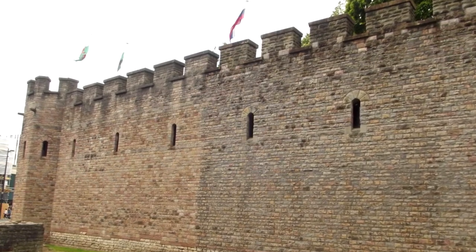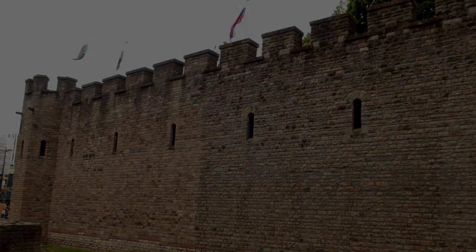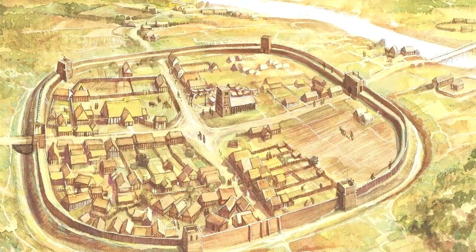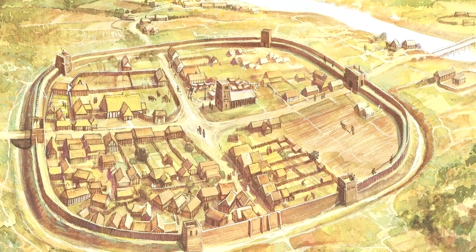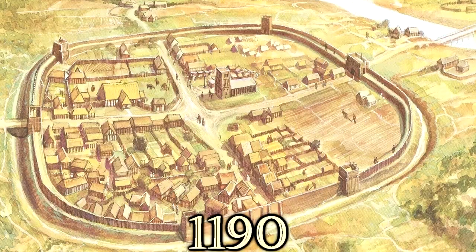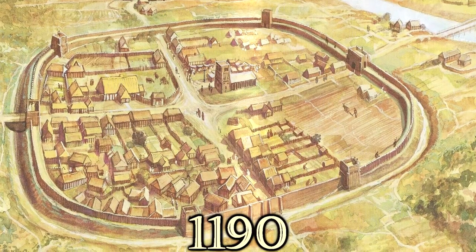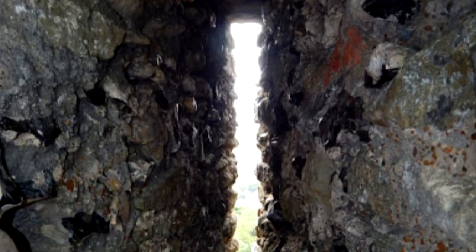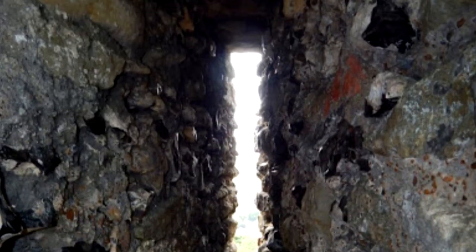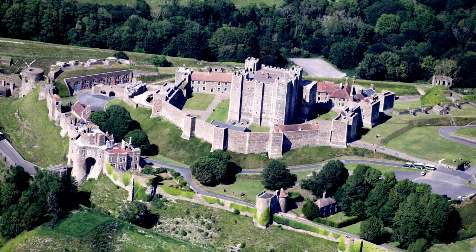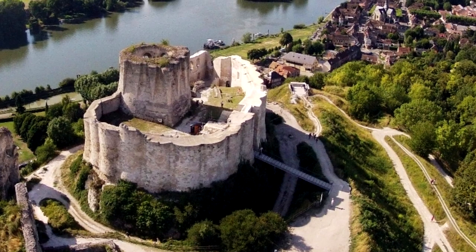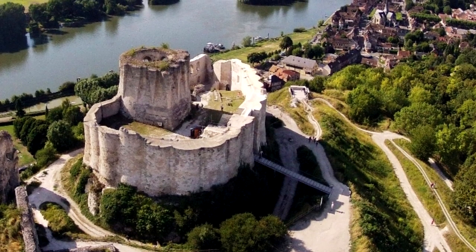Evidence of arrow slits became scarce after the fall of Rome, and arrow slits in medieval defenses were rare before the year 1190. They seem to have been only reintroduced towards the end of the 12th century in castles such as Dover and Framlingham in England and Richard the Lionheart's Chateau Gaillard in Normandy.